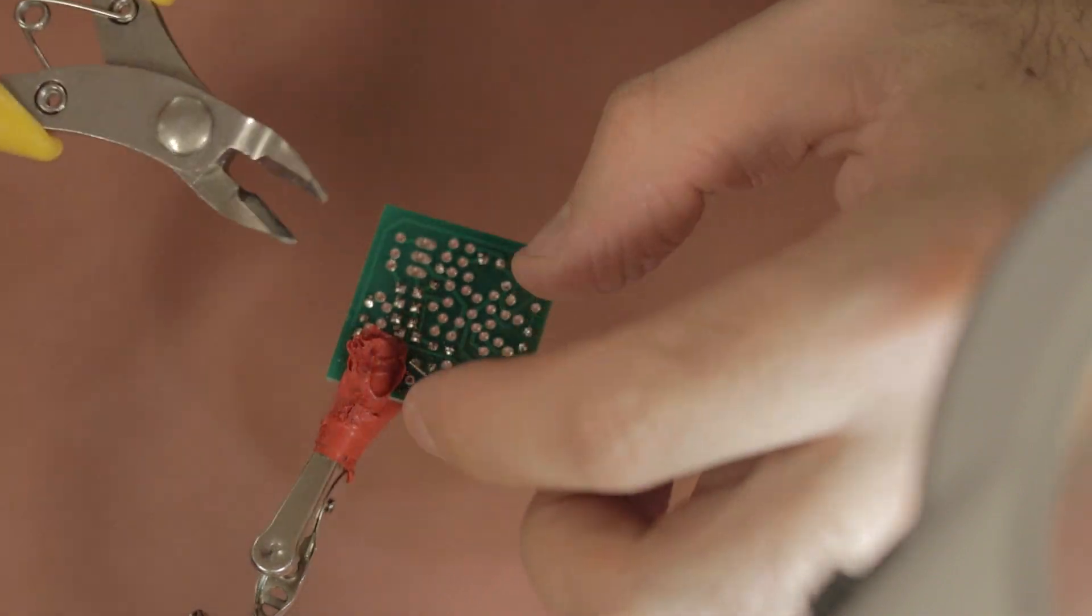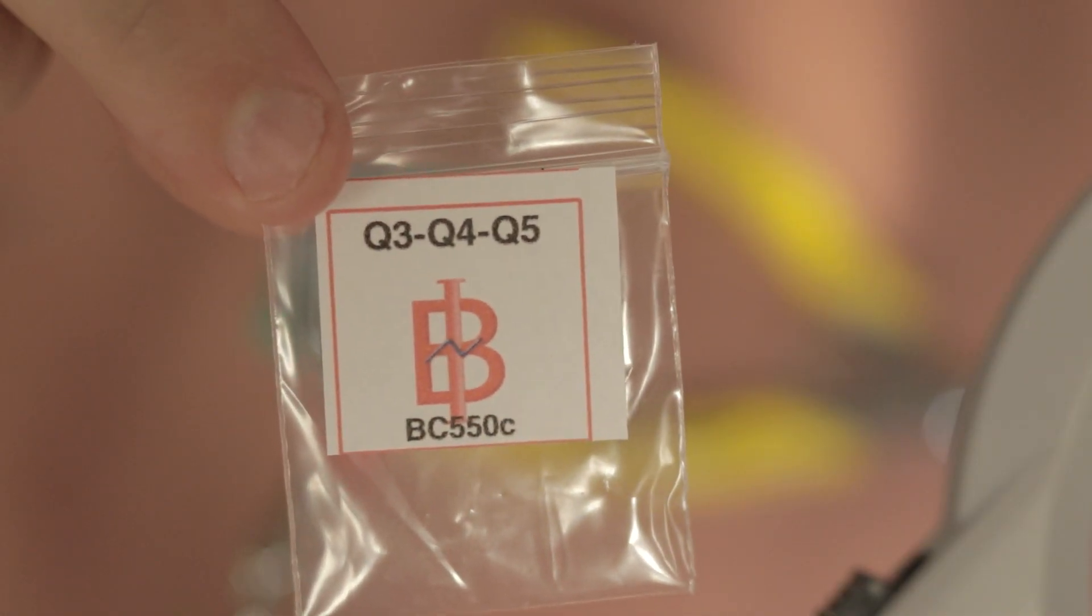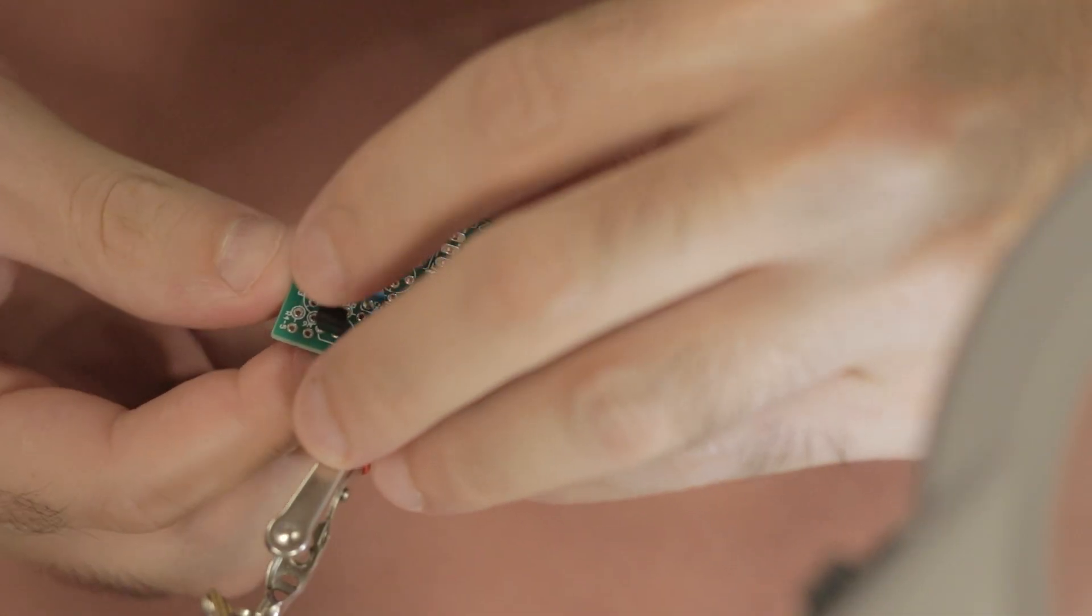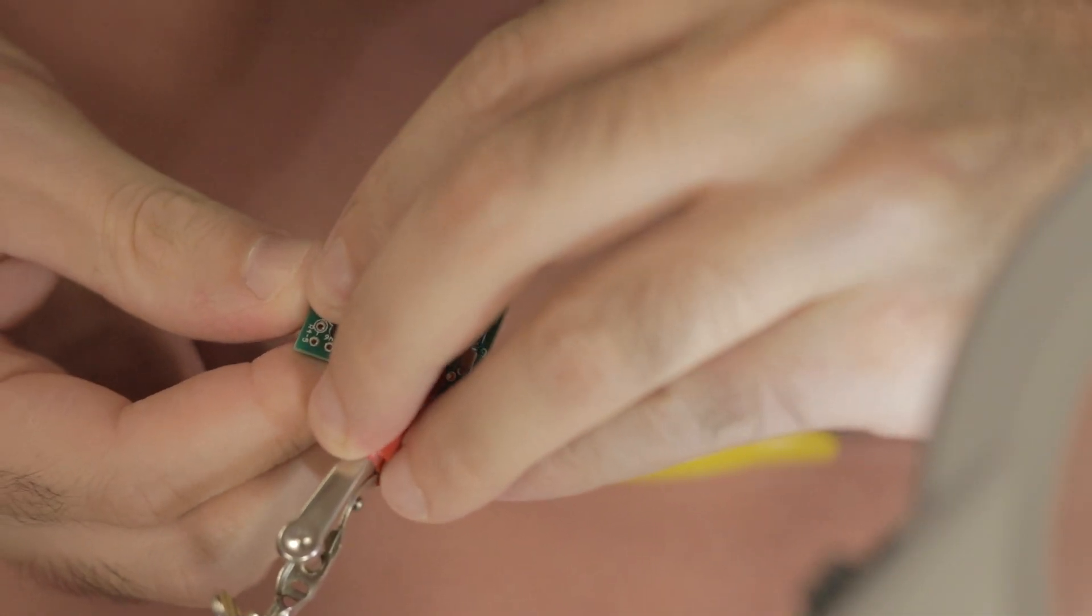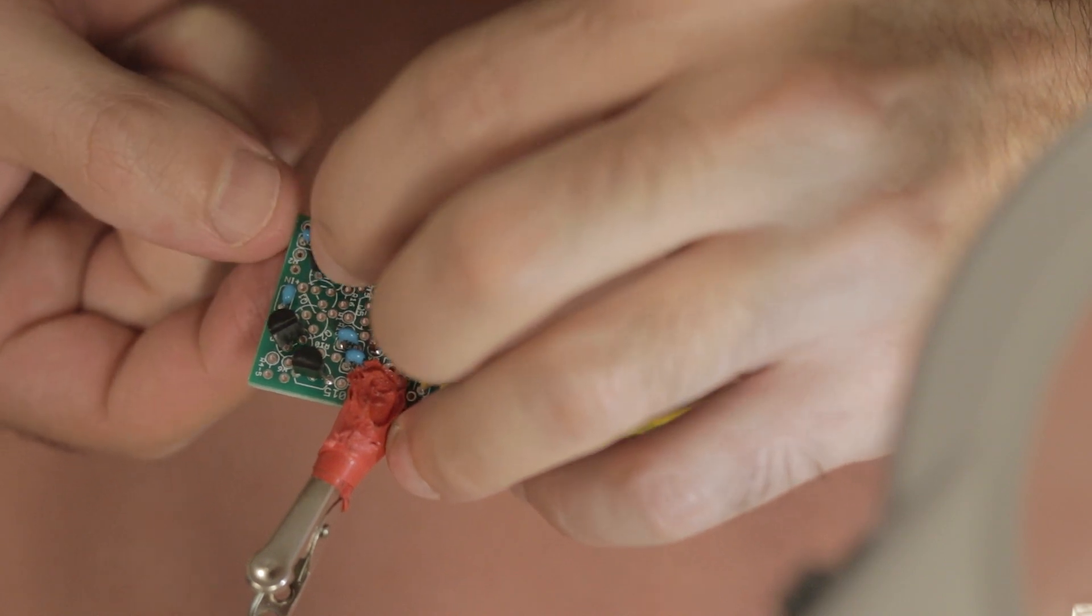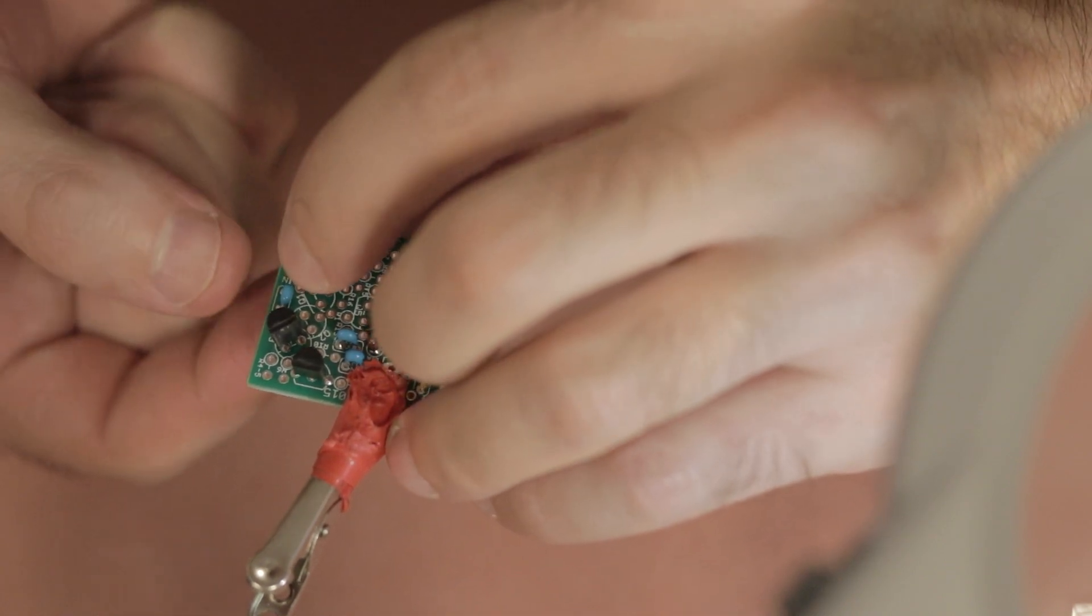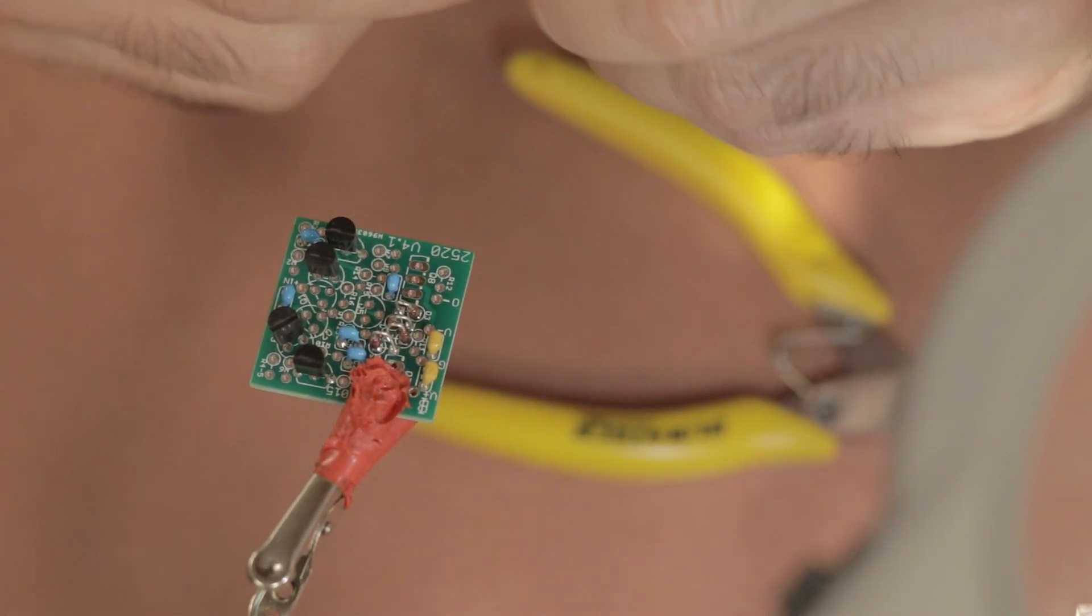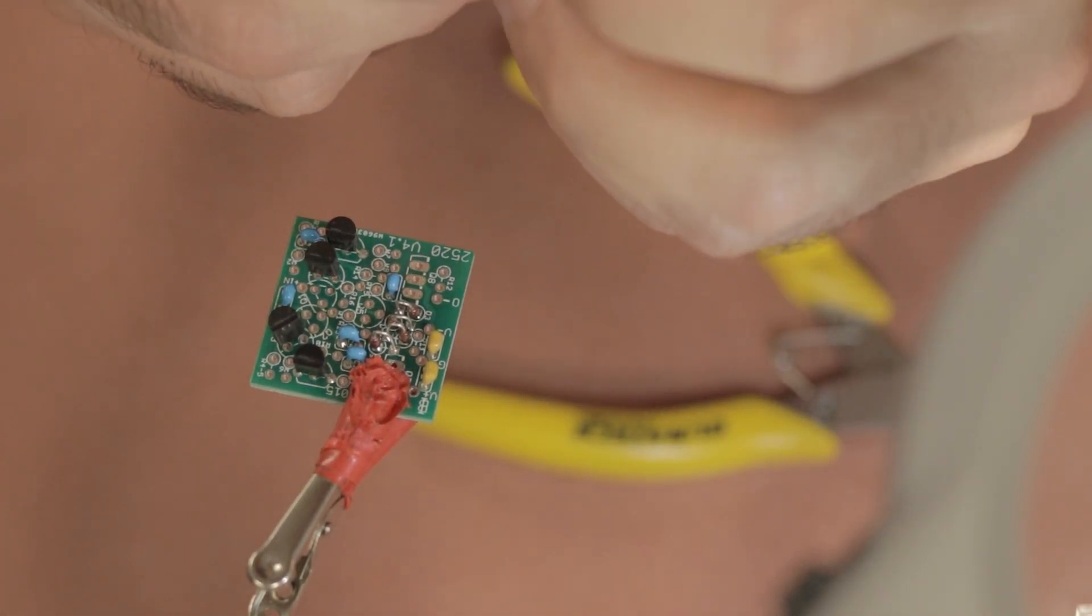Then you want to grab the bag that says Q3, Q4, Q5, and that'll have a bag of transistors in it, and they will be labeled BC550C. As always, these transistors—just make sure that you place them in the board in the right orientation, and they need to be in at Q3, Q4, and Q5 on the PCB board.